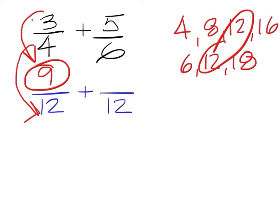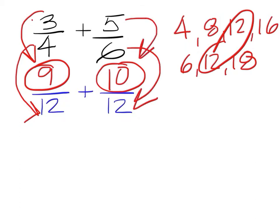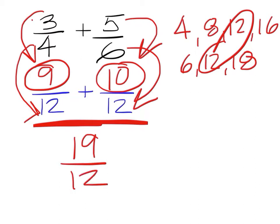What number goes in this spot? Johnson — 10 is right. How do we get a 10 in that spot? Collett — that's right, because 6 times 2 is 12, and then you multiply 5 by 2 to get the 10. When I add the fractions together, what do I get? Applegate M — 19 over 12 is right.